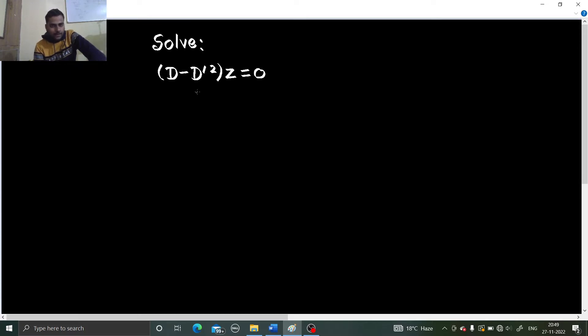So how to solve problems like this? In non-homogeneous, we have one type initially in which we resolve it into factors and we compare each factor with d minus md dash minus a. But now, what happens that we cannot resolve this into factors, this is not resolvable into factors, then how will we find the complementary function?